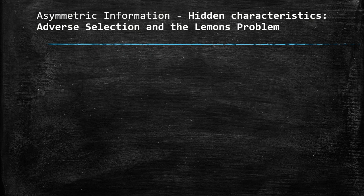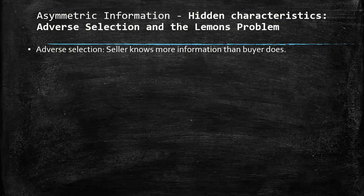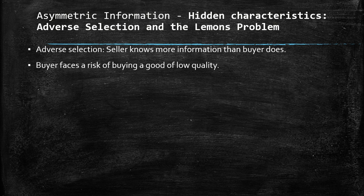Moving to hidden characteristics, we are going to talk about adverse selection and the lemon problem. Adverse selection occurs when the seller knows more information than the buyer does. The seller is the agent — the informed party — while the buyer doesn't know, so the buyer faces the risk of buying a good of low quality. The market for used cars is the most important example of this situation of hidden characteristics and adverse selection.